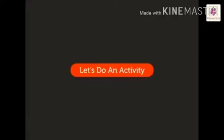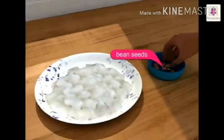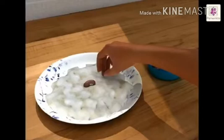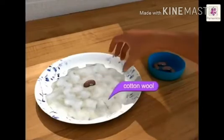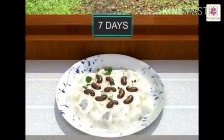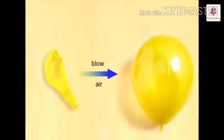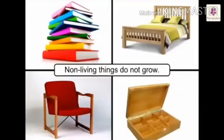The weight and height of living things increases as they grow. Let's do an activity to see the growth in a plant. Put a few bean seeds on the cotton wool. Make sure that the cotton is damp at all times, but do not over water. Keep it on a window sill without covering it. After 7 days, you will see that the bean seeds have sprouted and the bean plant has grown. A balloon also grows in size when we blow air into it — is that growth? Blow into a balloon and the size of the balloon increases, but the size of the balloon decreases again when we let the air out. Non-living things do not grow.